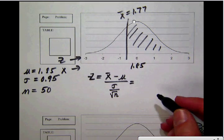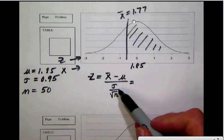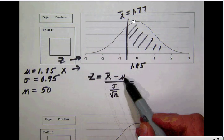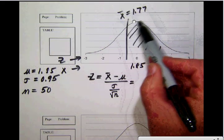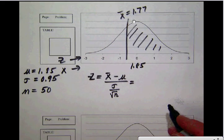We're going to have the formula that says x̄ minus μ. x̄ is the average of the sample, the average of the 50, which they tell us in our story is this 1.77 value.